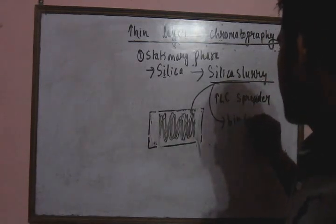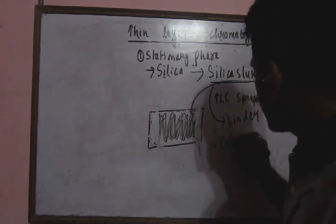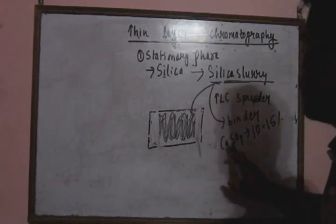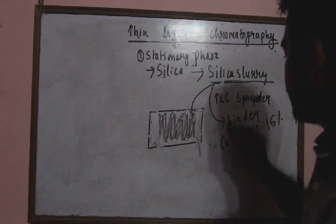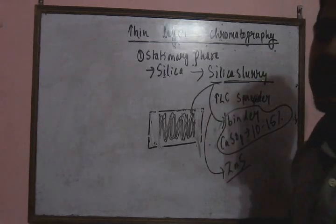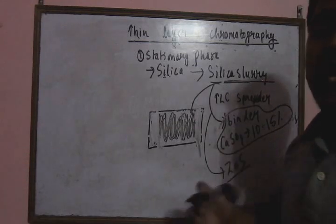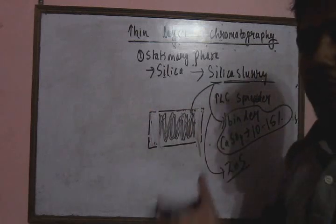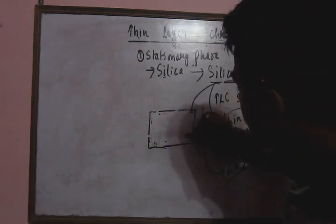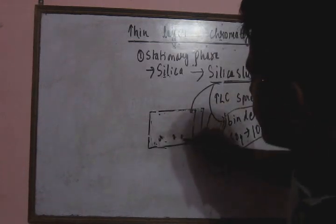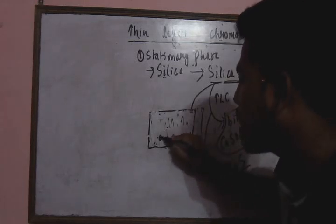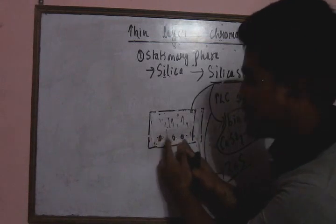After making the slurry, you have to add a binder. Binders are usually calcium sulfate (CaSO4) added at about 10–15% composition. You can also add zinc sulfate because it provides fluorescence. After separation, the plate gives off light across its surface, but where compounds are located there will be dark spots, allowing you to identify where each compound is.